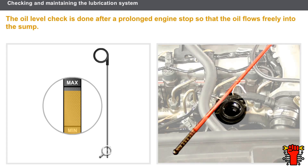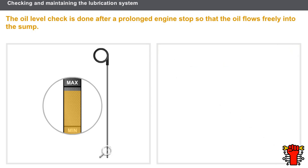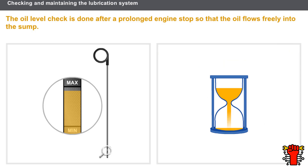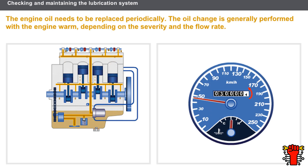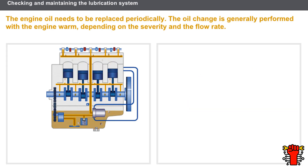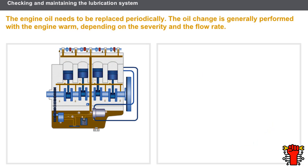Checking the oil level is the first check that should be carried out on an engine. The dipstick shows the driver that oil is required, and some vehicles also have an electrical dipstick. The oil level check is done after a prolonged engine stop so that the oil flows freely into the sump. Engine oil is very important to vehicle operation, as it becomes loaded with metal particles and deposits and thus loses its original properties.